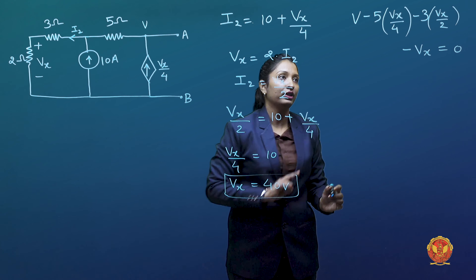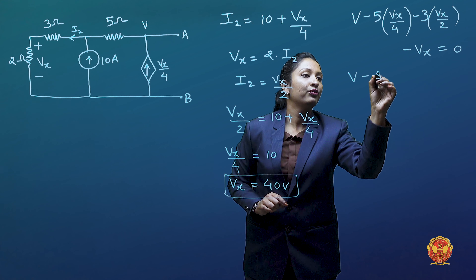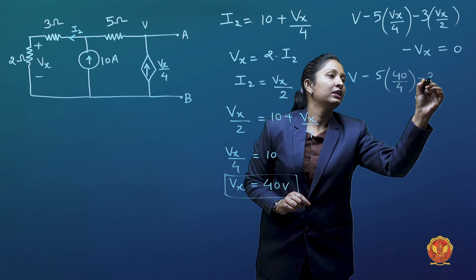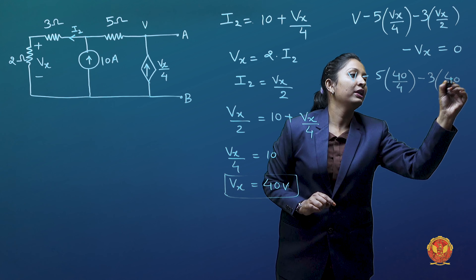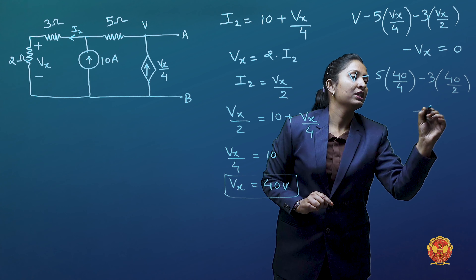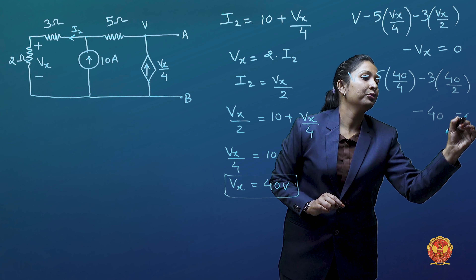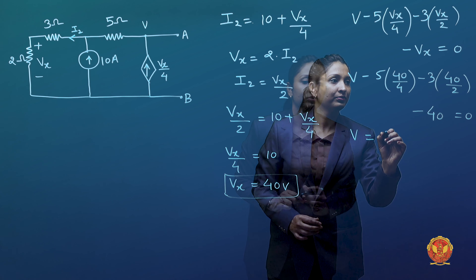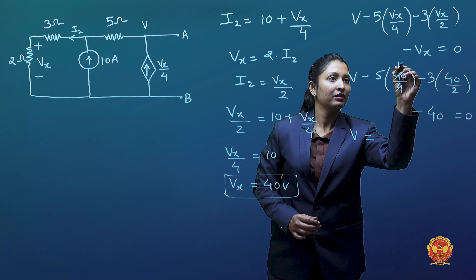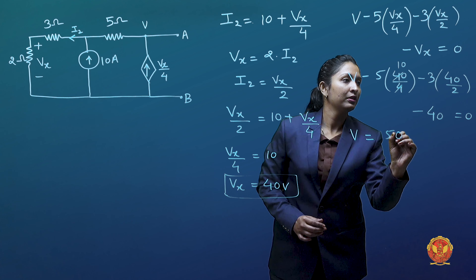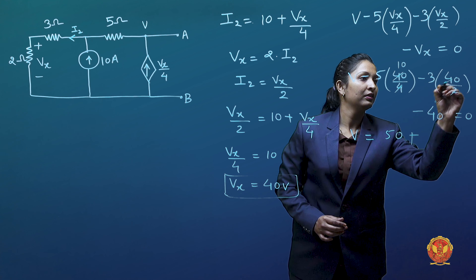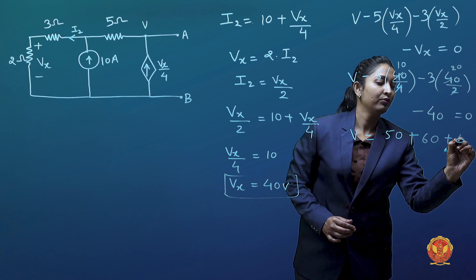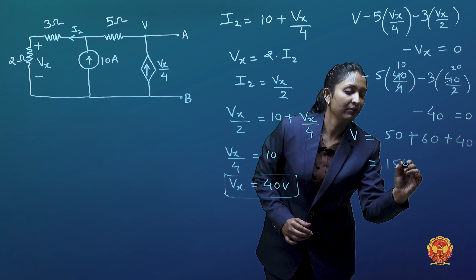Substituting I2 and Vx values into the KVL equation and solving, we get V equal to minus 150 volts. Therefore Vth, which is our open circuit voltage, is equal to 150 volts.